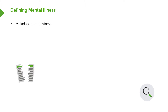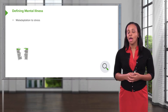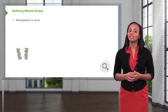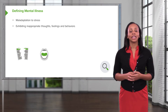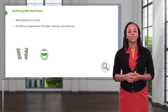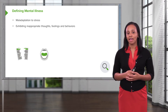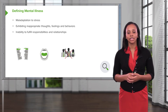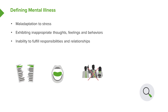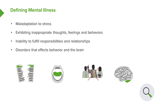Now let's define mental illness. Mental illness is the maladaptation to stress, exhibiting inappropriate thoughts, feelings, and behaviors, the inability to fulfill responsibilities and relationships, and any disorder that affects the behavior caused by the brain.